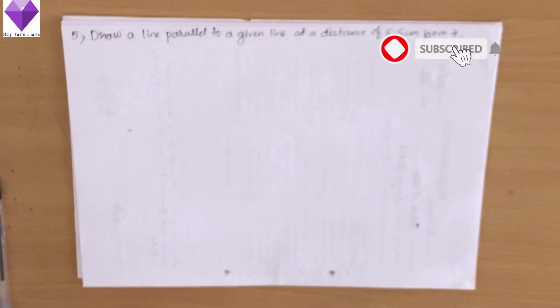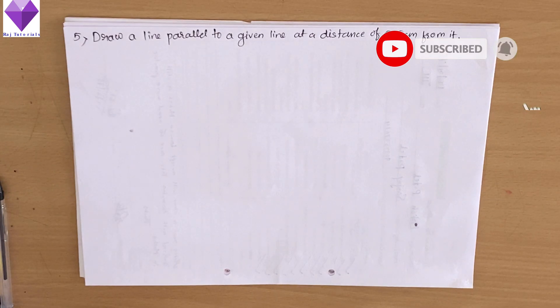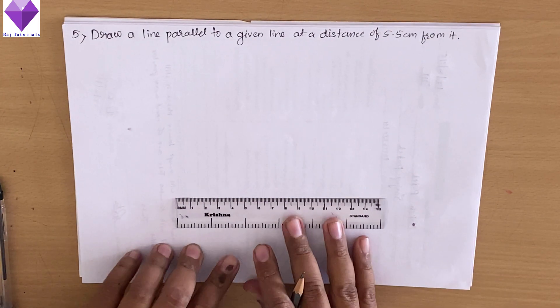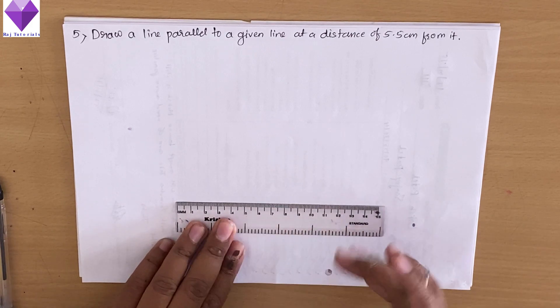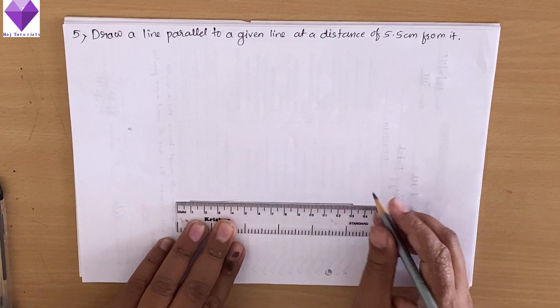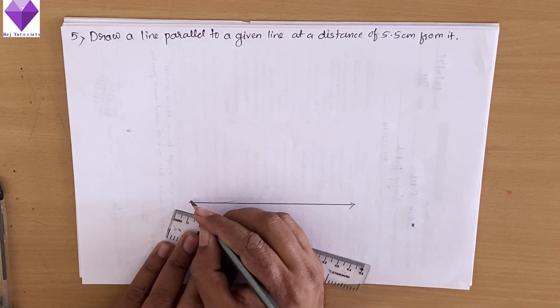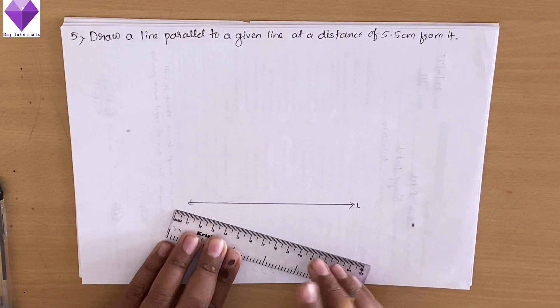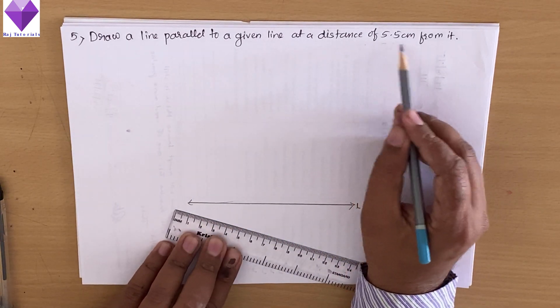Hello students, now we are given the question: draw a line parallel to a given line. First, I am making a line. Let us give the name L to that line. Now we want a distance of 5.5cm.